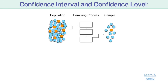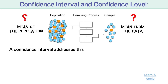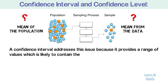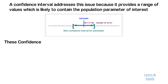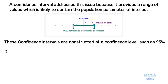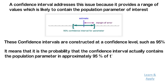Confidence interval and confidence level: the purpose of taking a random sample and computing a statistic such as the mean is to approximate the mean of the population. How well the sample statistic estimates the underlying population value is always an issue. A confidence interval addresses this by providing a range of values which is likely to contain a population parameter of interest. These confidence intervals are constructed at a confidence level, such as 95%, meaning there is a probability that the confidence interval actually contains the population parameter in approximately 95% of cases. So there is a 1 in 20 chance — i.e., a 5% chance — that our confidence interval does not include the true mean.